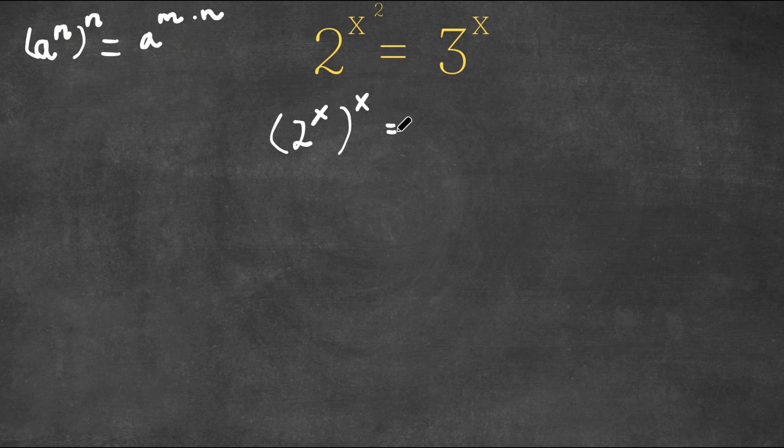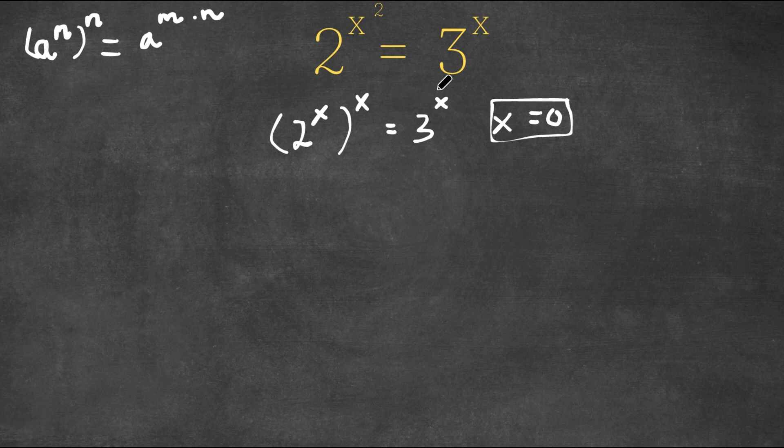Now this is equal to 3 to the power of x. And if you didn't already notice, an immediate solution actually is x equals 0. Because if we plug in 0 for x, both of these terms would equal 1, because anything to the power of 0 is 1. However, that is not the only solution.